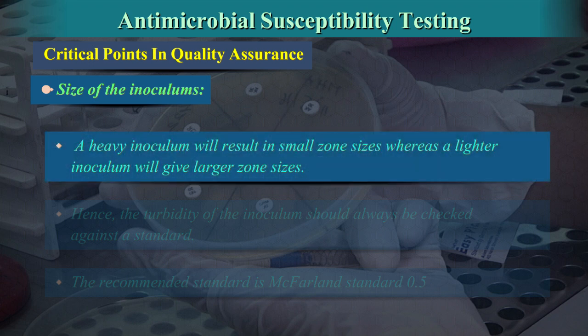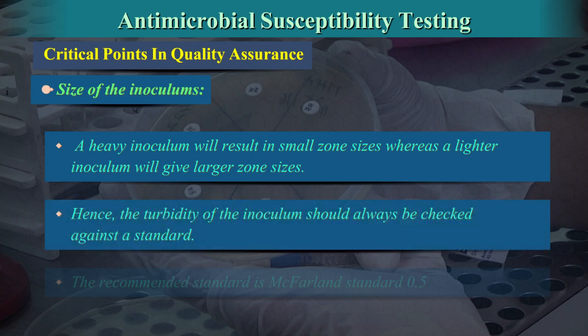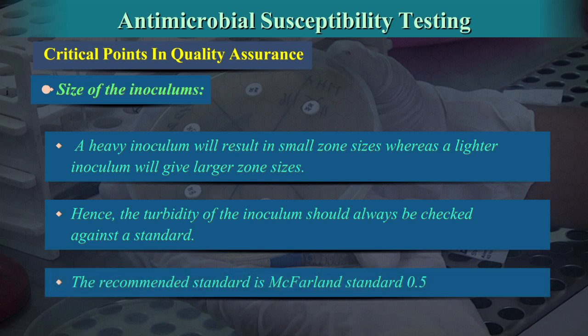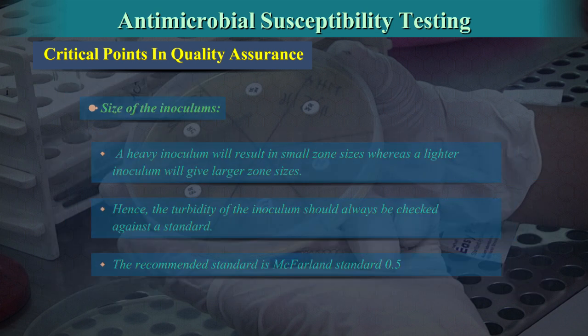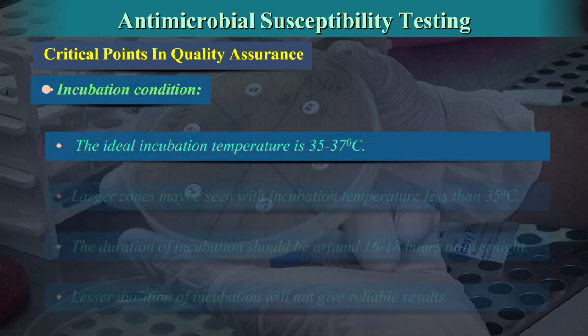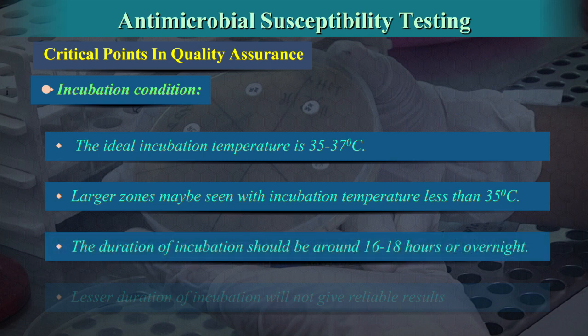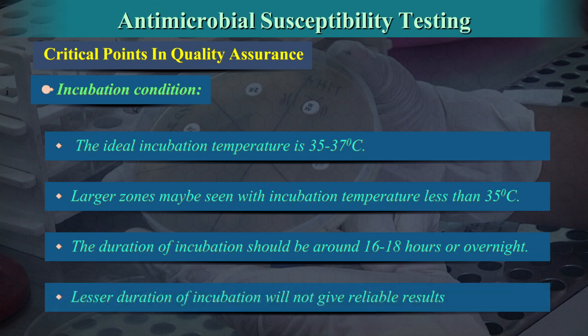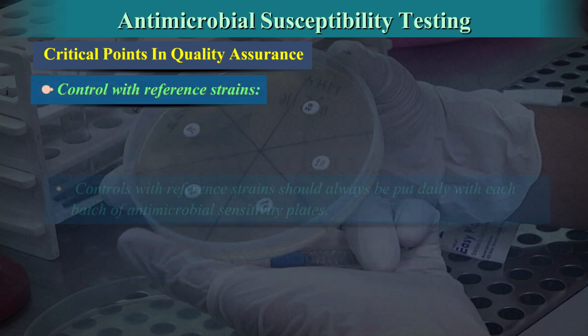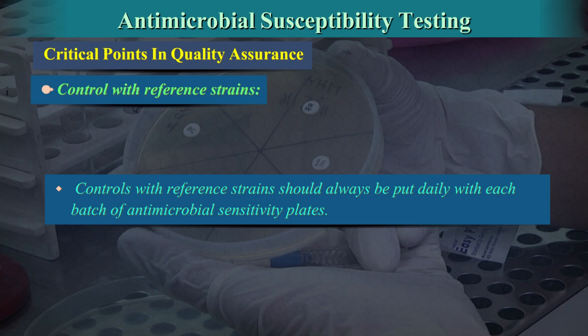Size of the inoculum: A heavy inoculum will result in small zone sizes, whereas a lighter inoculum will give larger zone sizes. Hence, the turbidity of the inoculum should always be checked against a standard; the recommended standard is the 0.5 McFarland standard. Incubation condition: The ideal incubation temperature is 35 to 37 degrees centigrade. Larger zones may be seen with incubation temperatures less than 35 degrees centigrade. The duration of incubation should be around 16 to 18 hours or overnight; lesser duration will not give reliable results. Controls with reference ATCC strains should always be run daily with each batch of antimicrobial sensitivity plates.